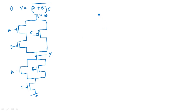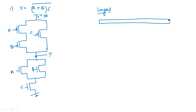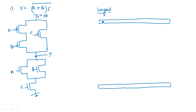Now let us go to the layout diagram. First, draw the metal lines VDD and VSS. This is a metal one layer. The top one is VDD and the bottom one is VSS, which is ground.